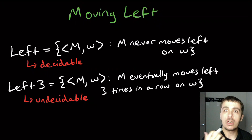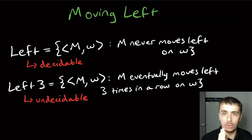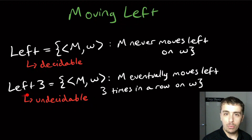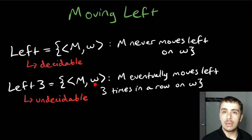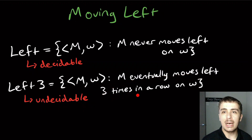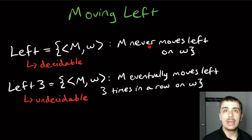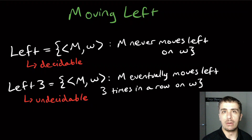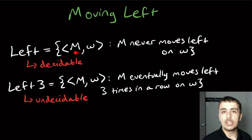We're talking about ordinary Turing machines here — the ones that just move left and right, no stopping, no jumping. LEFT3 is very similar: it's Turing machine and input pairs where the Turing machine eventually moves left three times in a row on W. The first asks does it ever move left at all, the second asks does it ever move left three times in a row. It turns out there's a fine line between being decidable and undecidable.